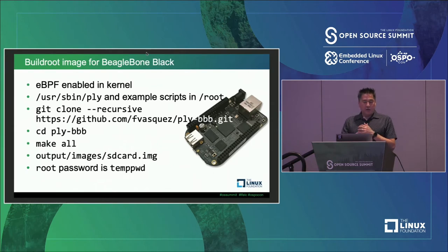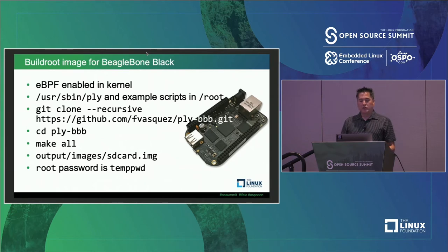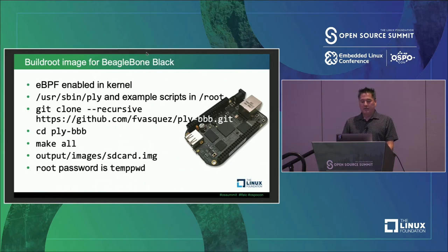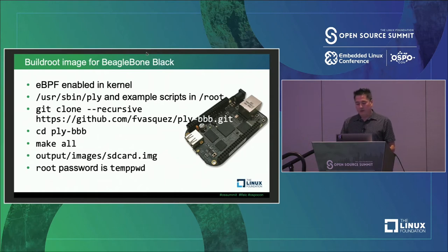I'm now going to show you how to enable eBPF in the kernel and add the Ply package to a root filesystem image targeting the BeagleBone Black. There's a GitHub repository with everything I'm going to show. If you don't want to do it yourself, you can clone my repo, do four steps, and end up with a micro SD card image you can boot on the BeagleBone Black. Log in as root with password TEMPPWD. There's an SSH server, so once you know the IP address, you can SSH in.